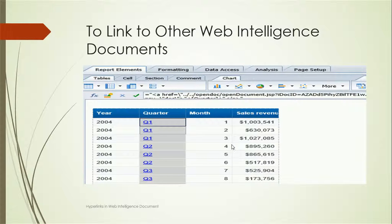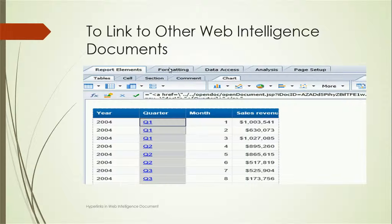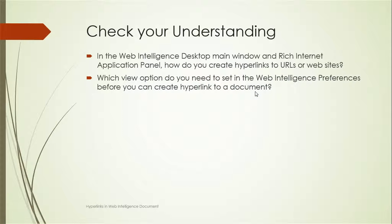Looking at an applied example on a quarter object: you can see the hyperlink connecting to another document. In the formula toolbar you can see the Open Document function that was automatically generated by Web Intelligence. This shows how hyperlinks are stored and how documents are linked together.